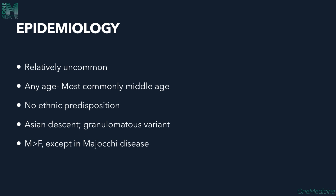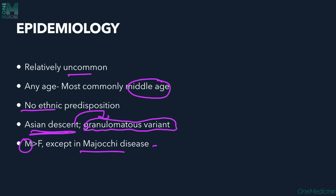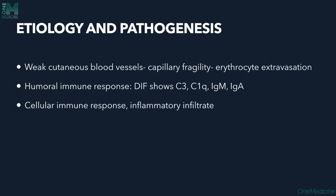Epidemiologically, PPD is a relatively uncommon condition. Any age can be affected, but it most commonly presents in middle-aged individuals. There is no ethnic predilection, except that people of Asian descent more commonly have the granulomatous variant. Males are mostly affected, except in Majocchi's disease, where females are predominantly affected.